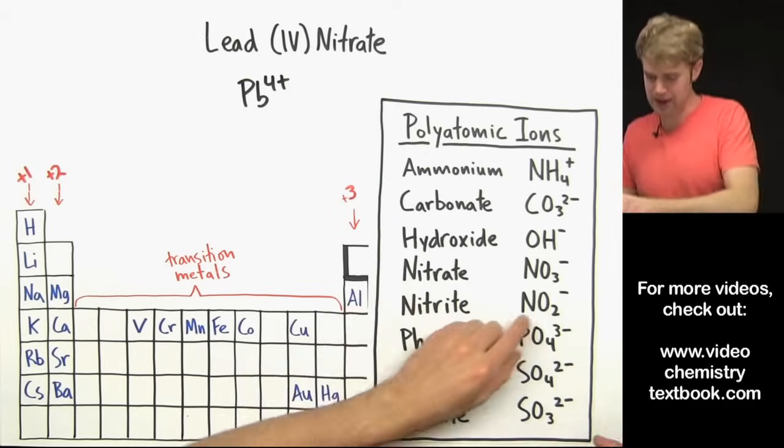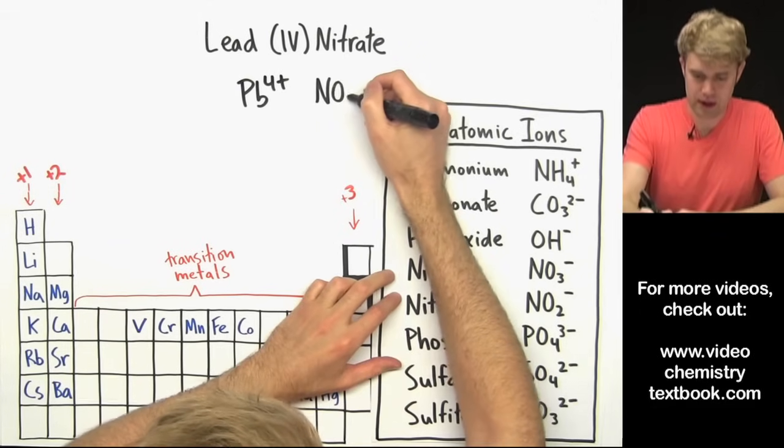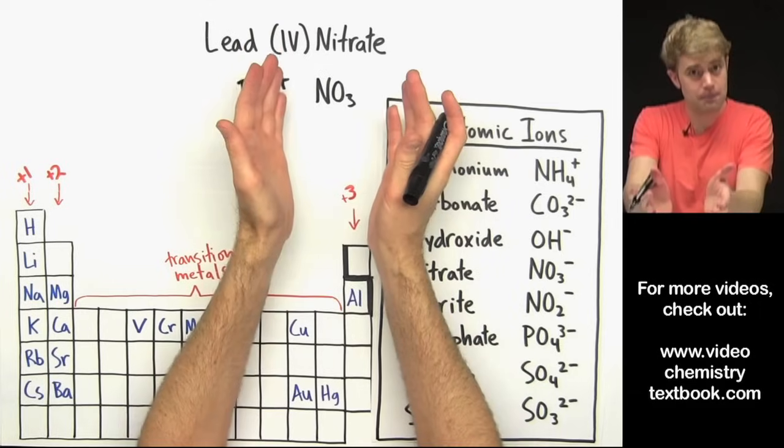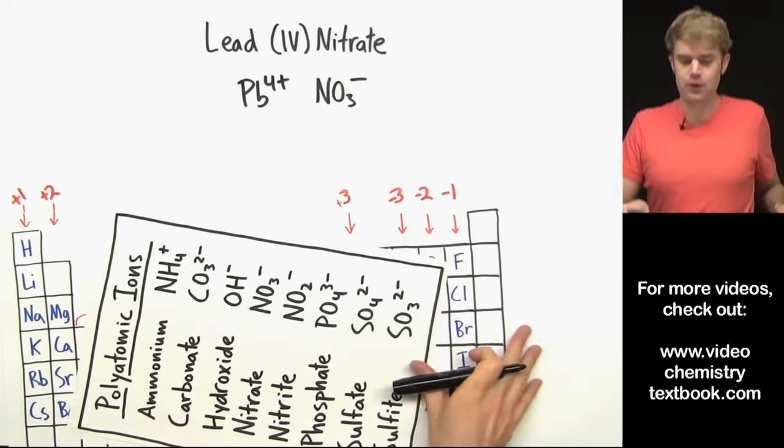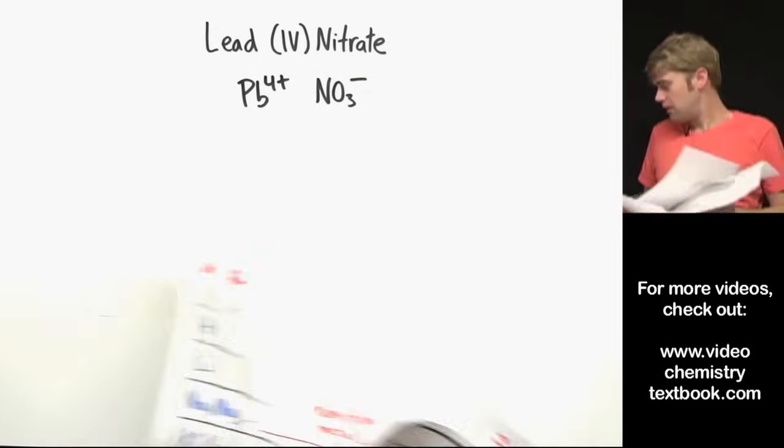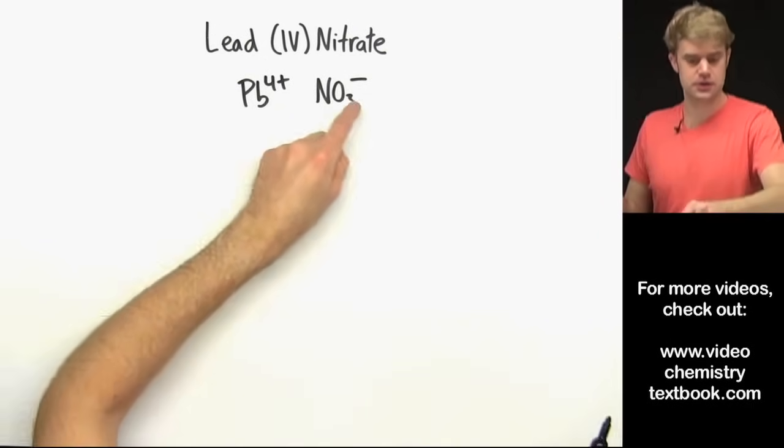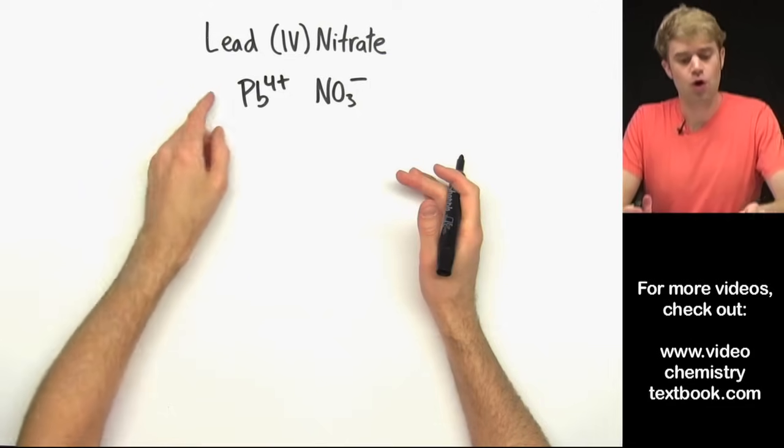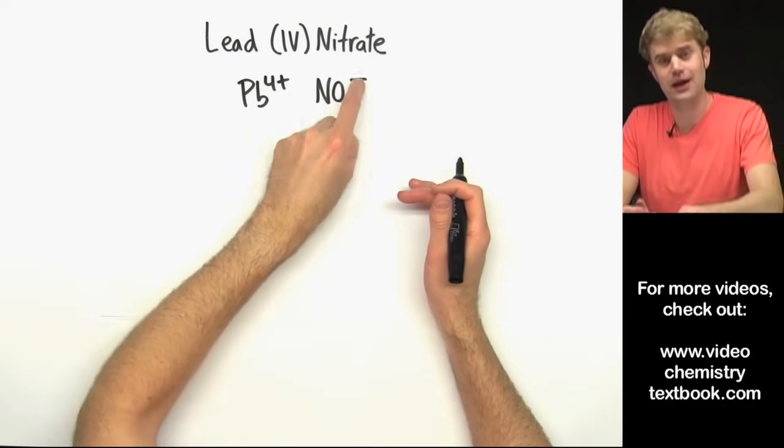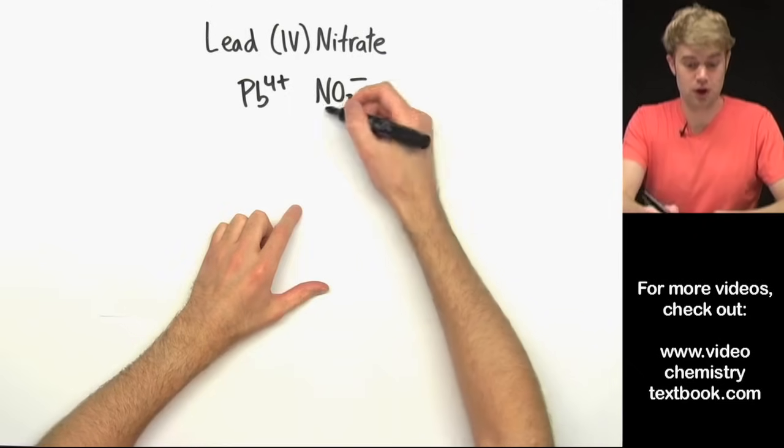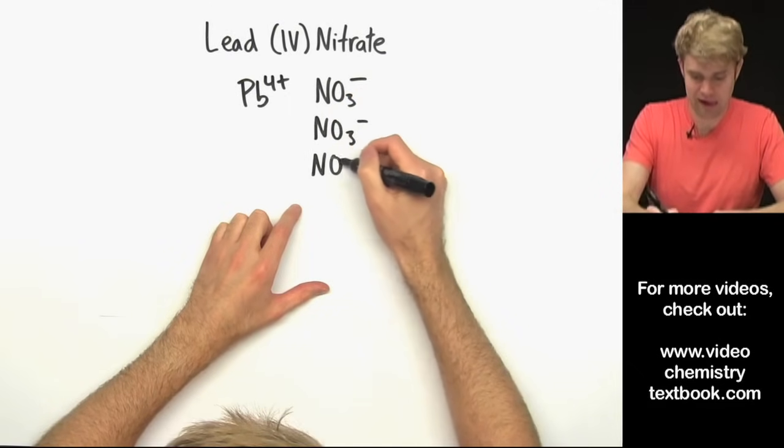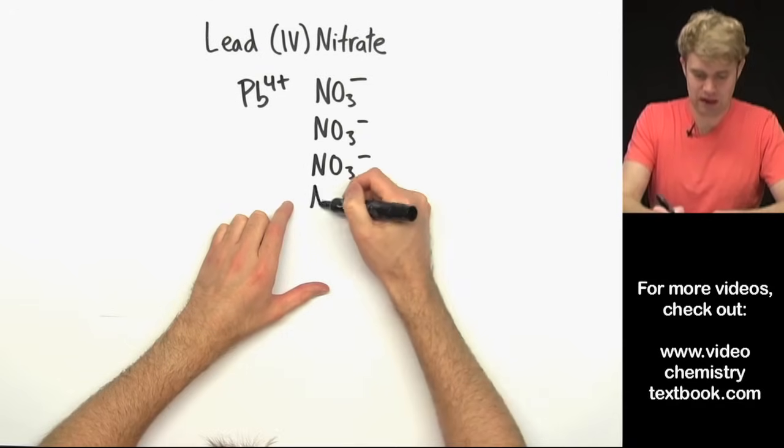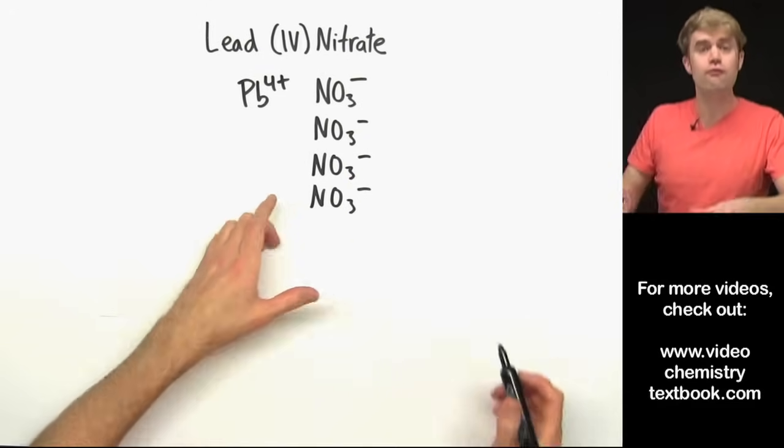Anyway, nitrate is right here. NO3 and that whole clump of atoms has a 1 minus charge. So now we want to add one or both of these to make the charges balance. We have 4 plus from the lead and we have 1 minus from the nitrate. So I add another one of these. Now I have 2 minus. Now I have 3 minus. And now I have 4 minus.